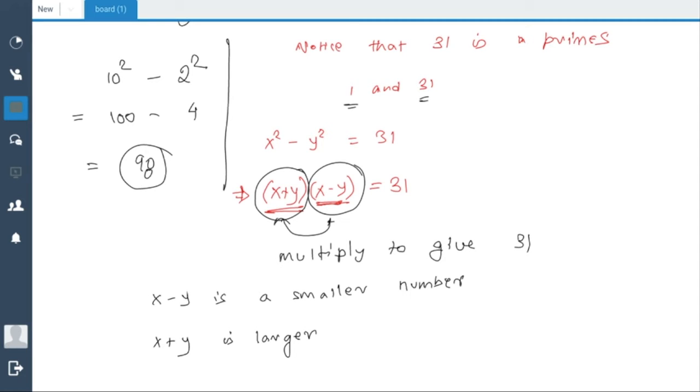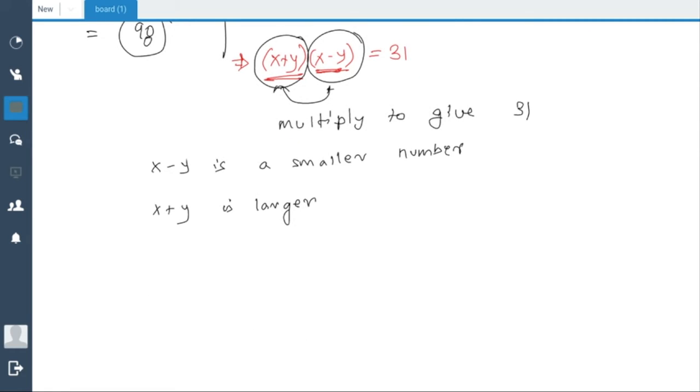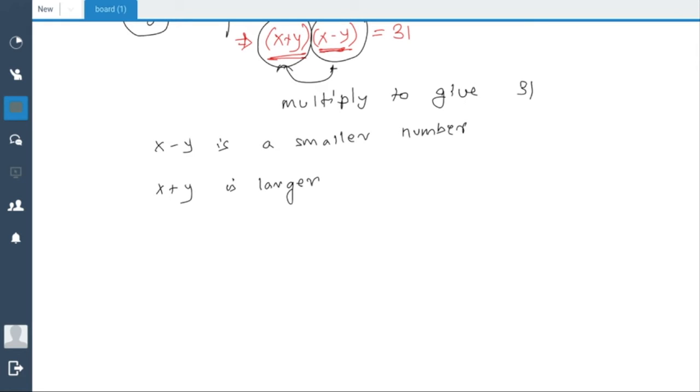And x + y is a larger number. Of course we are assuming that both of them are positive whole numbers. So if x - y is a smaller number, then we can set x - y = 1, and the larger one will be 31, so x + y = 31.